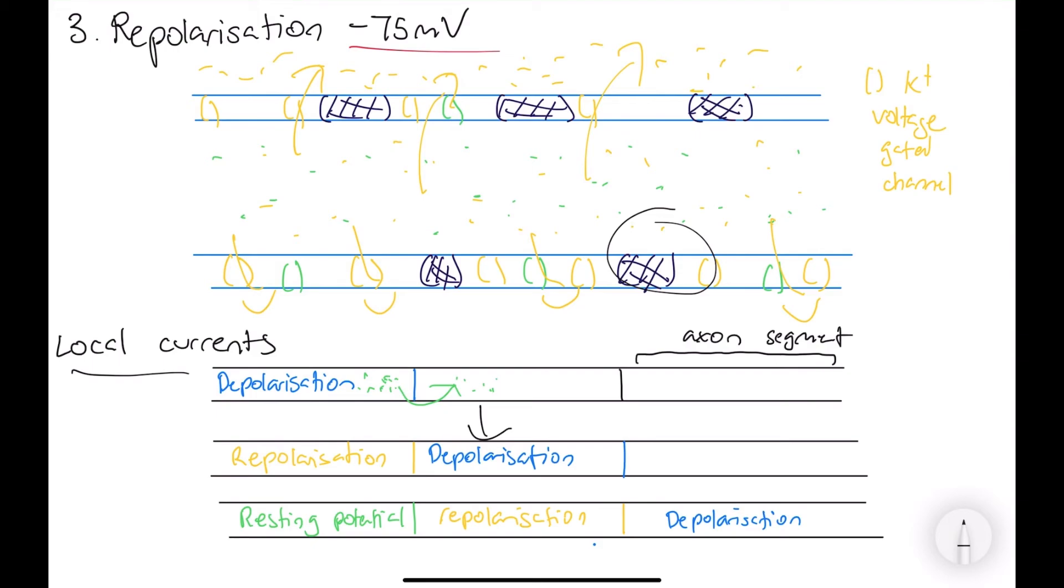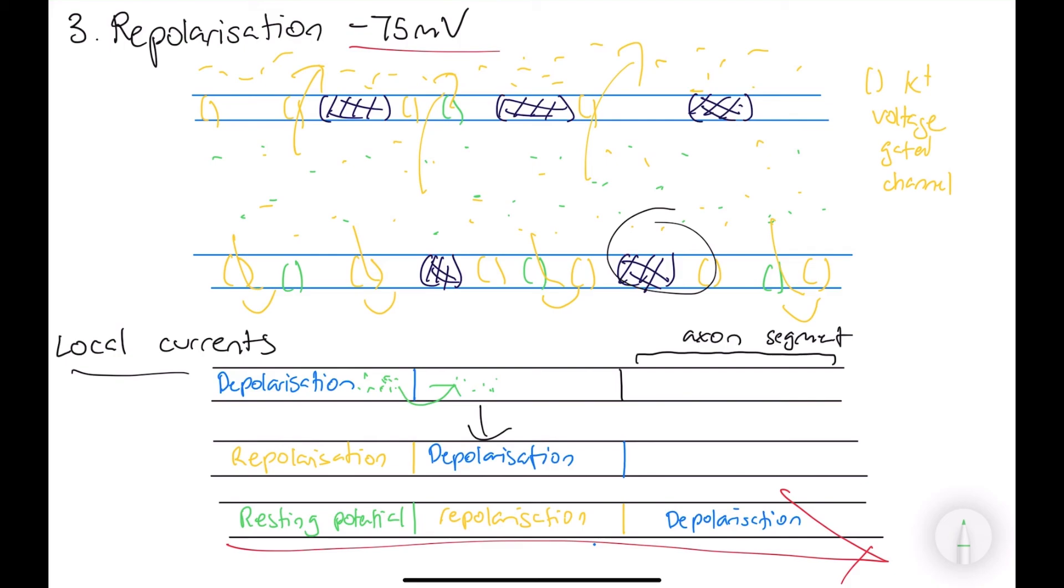And the reason why the nerve impulse will always go in one direction, it will always go forward, we don't want an impulse to go backward. Always go forward. And this is because at the depolarization stage, there's a refractory period, which is when all of the sodium voltage-gated channels are closed. So, there's no more movement of the sodium ions. So, this prevents depolarization going backwards. It prevents the movement of ions going this way.